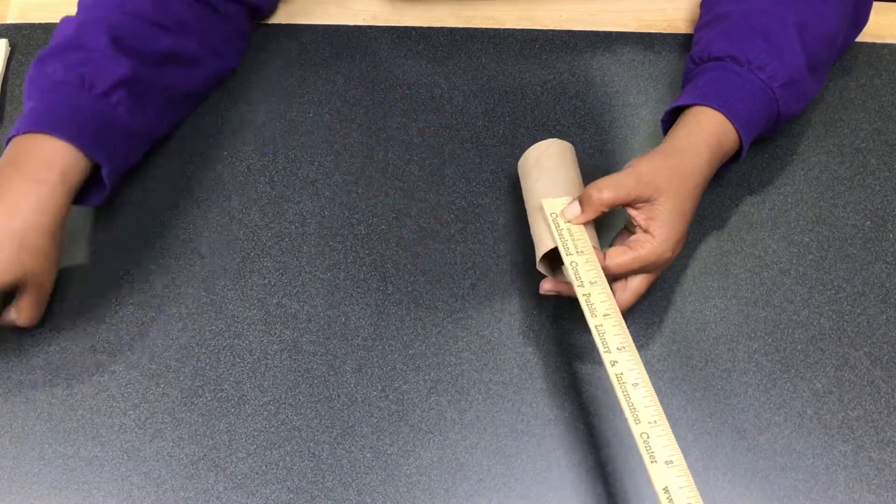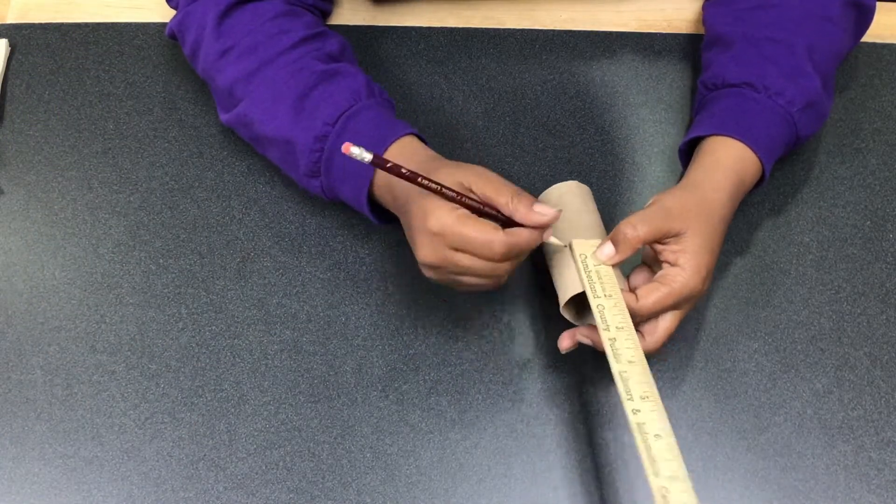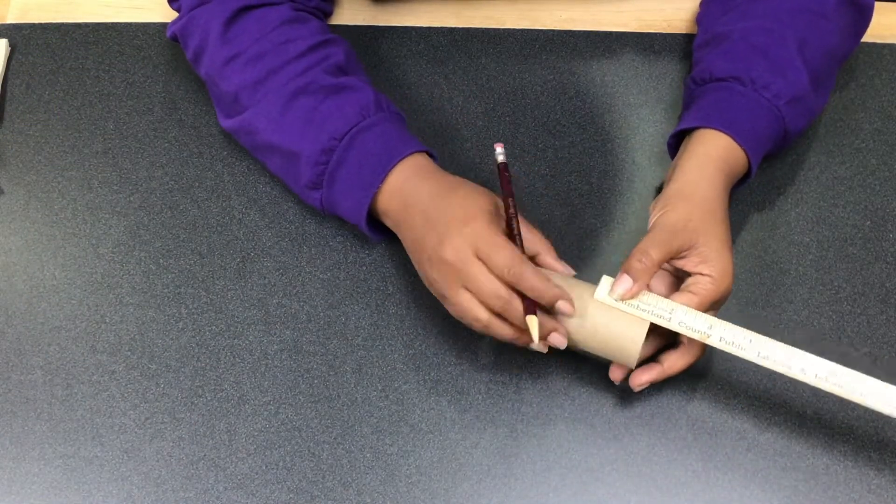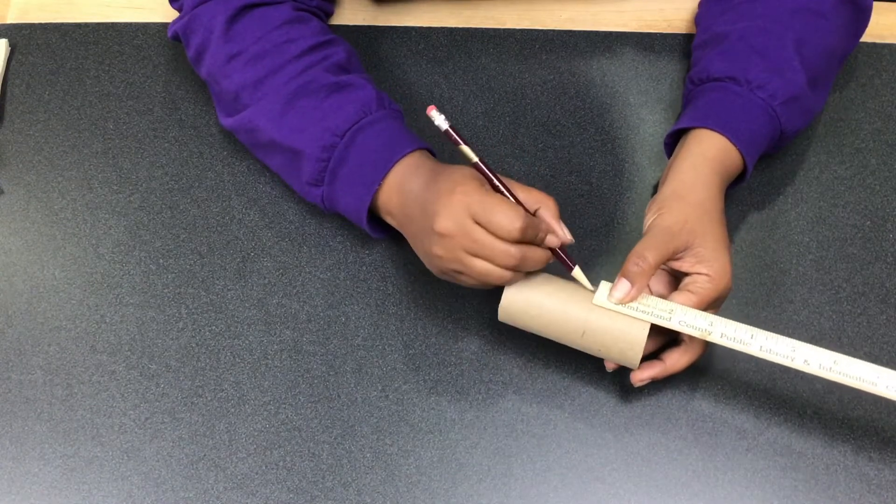Take the toilet paper roll and measure one and a half inches from the top of the roll and mark it. Do this all around the roll.